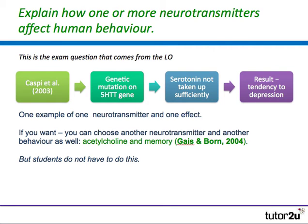You can also choose another neurotransmitter and another behaviour — for example, acetylcholine and memory using the Geisenborn study — but students do not have to do this. Unlike the hormones question, the neurotransmitter question will always be 'one or more.' However, when it comes to essays, it may be useful for students to know a second neurotransmitter. The Geisenborn and other studies in this webinar are provided in our key studies series by Tutor2U, so you don't have to write the summaries yourself.